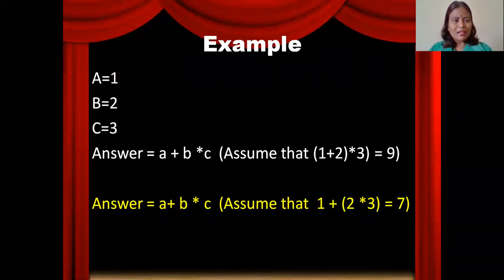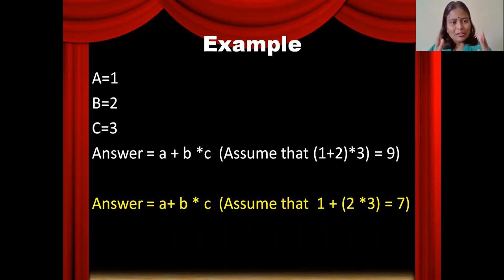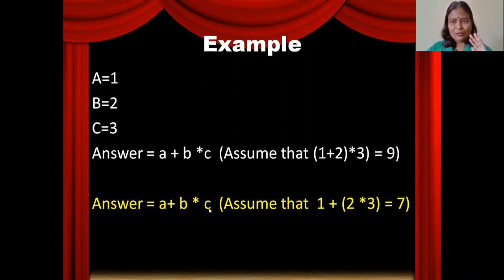Let us start with this example. Assume that A is equal to 1, B is equal to 2, C is equal to 3. You would like to find the answer using this formula: Answer = A + B * C. There are two possible ways of evaluating this expression.